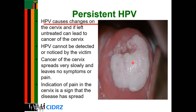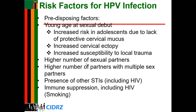Cancer of the cervix mainly spreads slowly and leaves no symptoms, or mostly just pain affecting other structures like the back and abdomen. An indication of pain in the cervix is a sign that the disease has already spread. Once the disease has spread to other regions, it may indicate it has reached stage three or stage four.